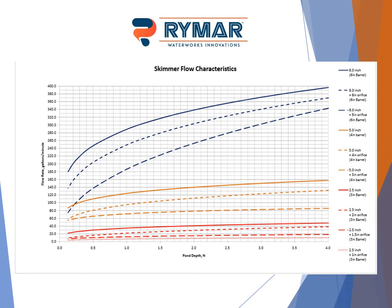Our flow rate chart shows that all skimmers have a flow rate curve. The Marley Float has three different models with different orifice configurations. Smaller models have a relatively small difference in flow rate across depths, while the larger 5-, 6-, and 8-inch models show a relatively larger difference in flow rate as depth increases.